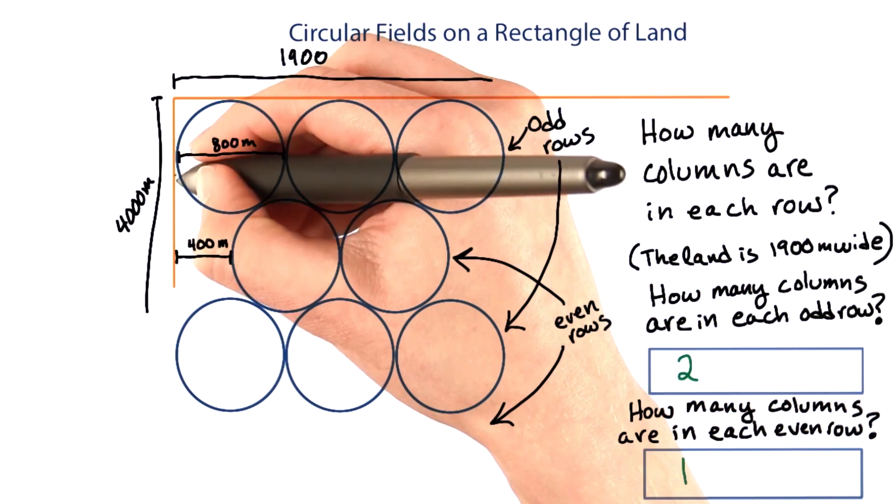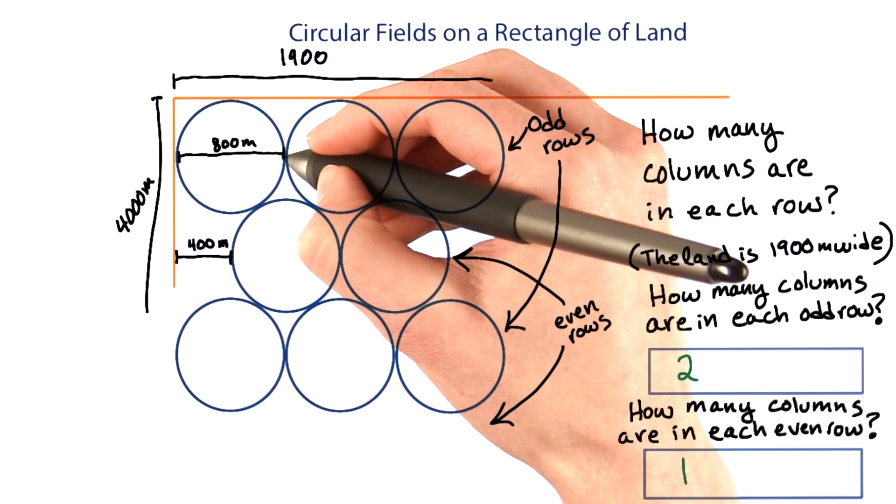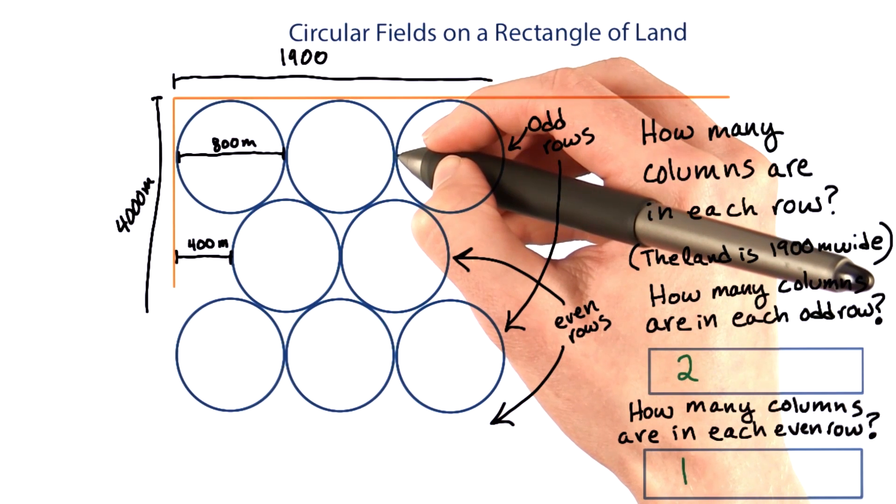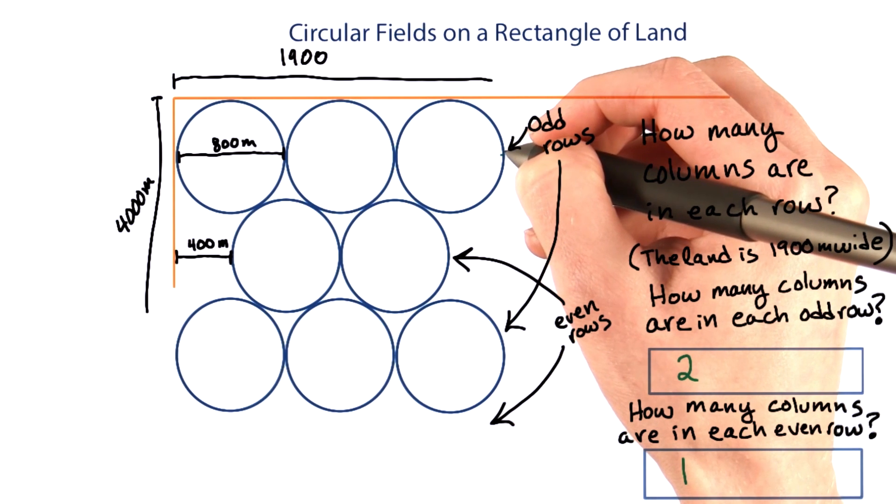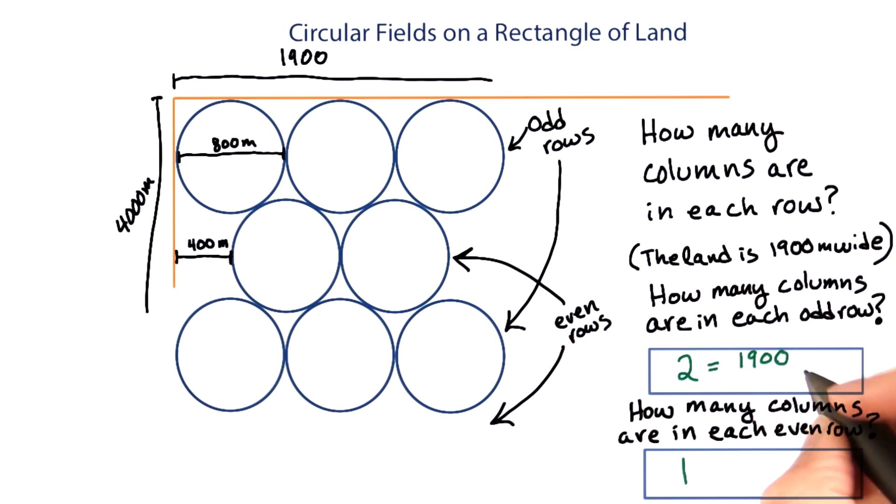If we start from the edge, we can fit 800 plus another 800, which is 1,600, but not another 800, which would give us 2,400. So that calculation was 1,900 over 800, and then we drop the decimal.